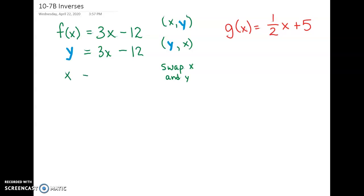So instead of y equals 3x minus 12, it's going to be x equals 3y minus 12. Now, this is the original function. This is f(x).